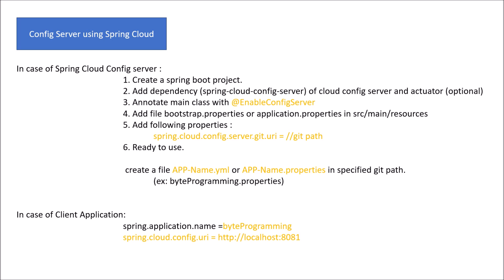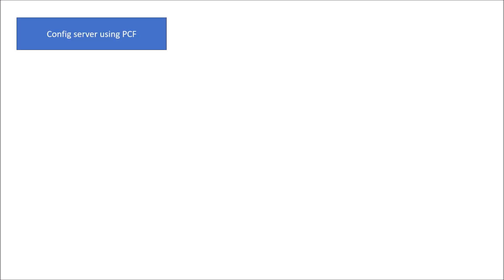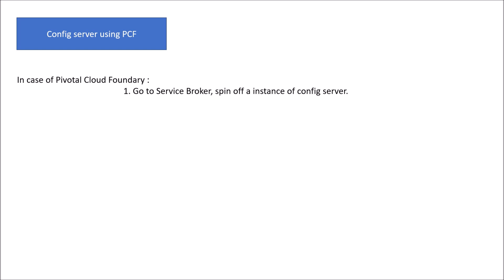For Pivotal Cloud Foundry, we can create a config server using a service broker. You spin up an instance of the config server using the service broker, then provide the Git URL, username, and password for your Git repository for authentication. These details are stored as JSON, and the service is ready to use.